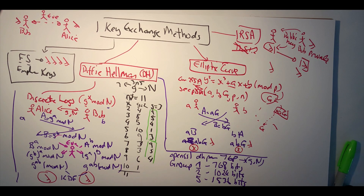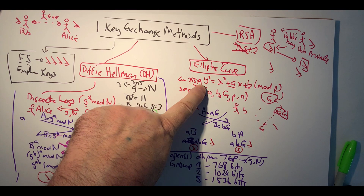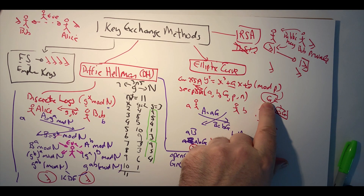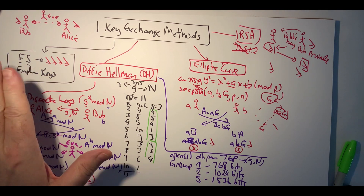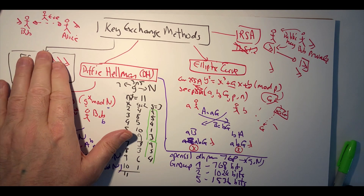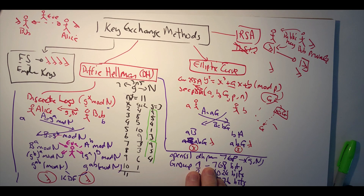That's been an outline of the different key exchange methods. We looked at the Diffie-Hellman method, the elliptic curve method, how we create g and n values for Diffie-Hellman, and also the RSA method. Curve 25519 uses a base point with x equals 9.